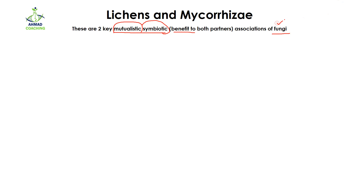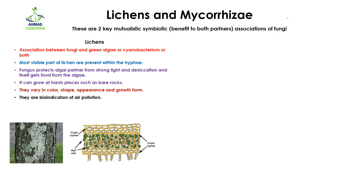In both relationships, one thing is common and this is fungi. First of all, lichens are actually the association between fungi and green algae or cyanobacterium, or in some cases both are also associated with fungi. The most visible part of the lichen is actually present in the hyphae. Fungi has hyphae, and in the hyphae the green algae or cyanobacteria cells are going to embed.